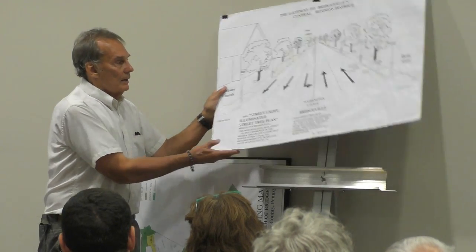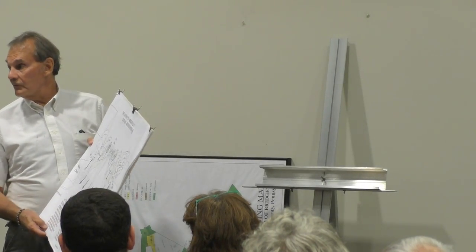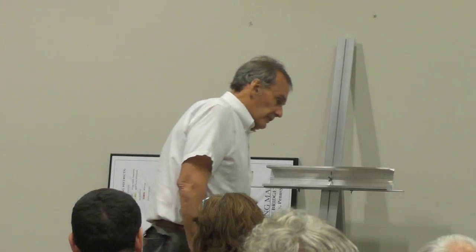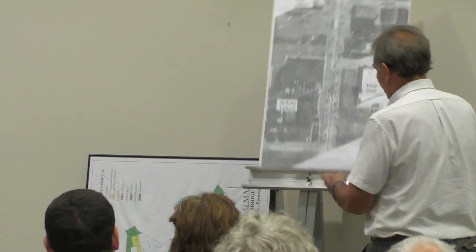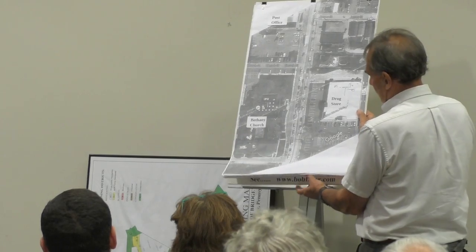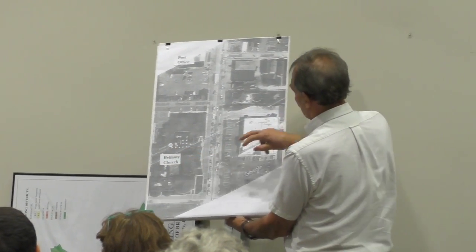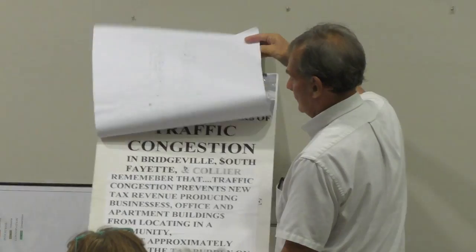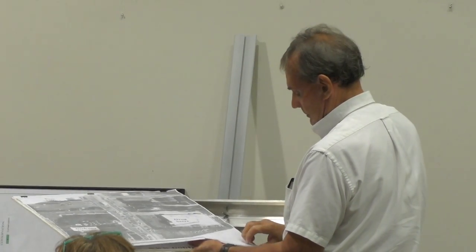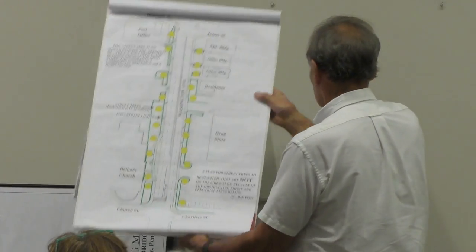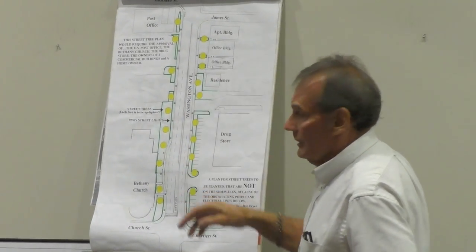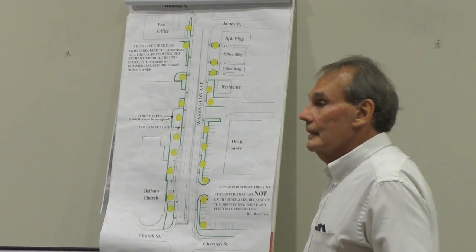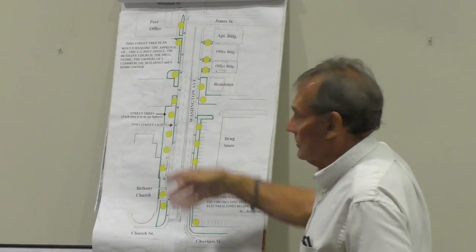This would require the cooperation and approval of the adjacent section of the church, the bus office, and some of the other people there. This is an overhead view of the central business system, again, in terms of the drugstore and the bus office. This is a more detailed line drawing.